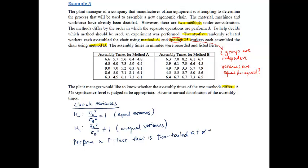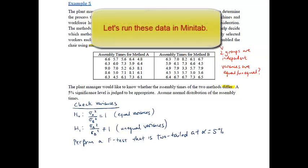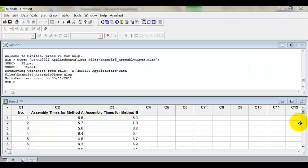And alpha, which is commonly used, will be 5%. So I'm going to go to Minitab. As you can see, I've already preloaded the data into Minitab. So I'm going to check whether the variances are equal or not.